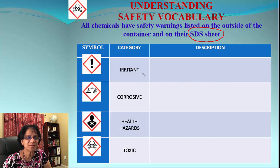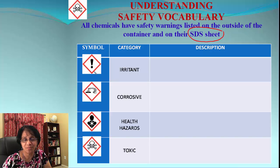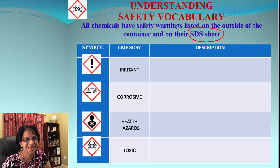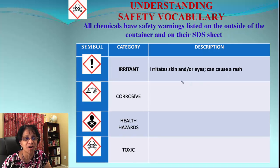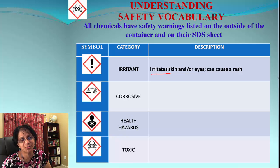The first term is irritant. Look at the symbol — it's like an exclamation mark, or if you think carefully, it may look like an upside-down eye. An irritant is a substance that irritates the skin or eyes and can also cause some rash. So stay away from irritants and be careful.